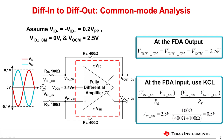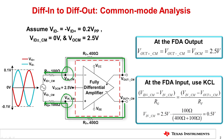A closer observation of the final equation will reveal that the feedback and gain resistors form a resistive divider network between the amplifier's outputs and the signal inputs, with the amplifier's input pins at the center of each resistor divider.